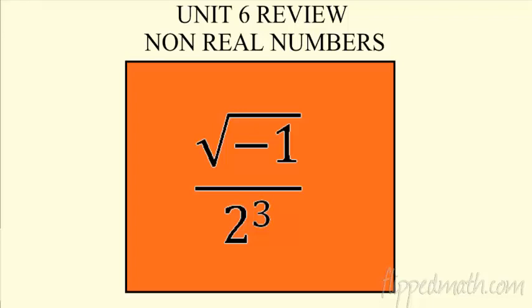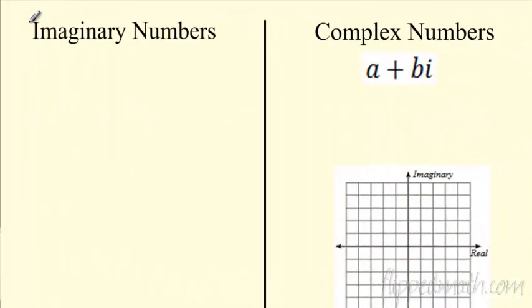Alright, here we go. Let's take a look at Unit 6, Non-Real Numbers. This is a quick review. Kind of threw another one of these hilarious comics up here. Did you figure this one out? What does this equal? Well, on top, what is the square root of negative 1? That is the definition of i. What's on bottom? 2 cubed is 8. So what does this mean? That's right. That is i over 8. Love it. Alright, let's do a quick review here.